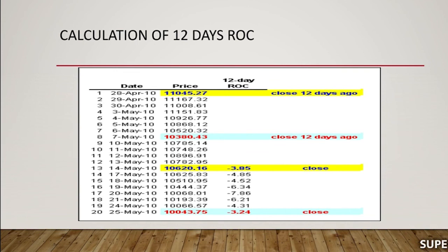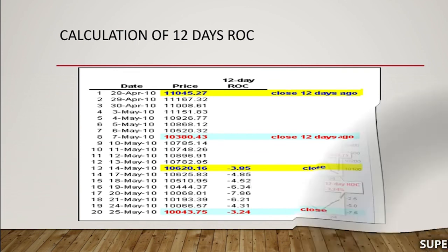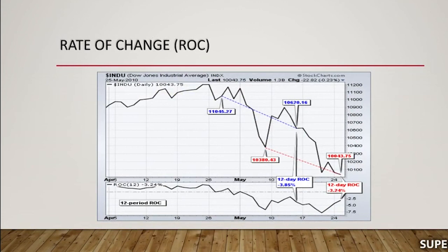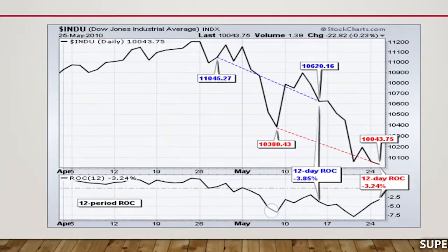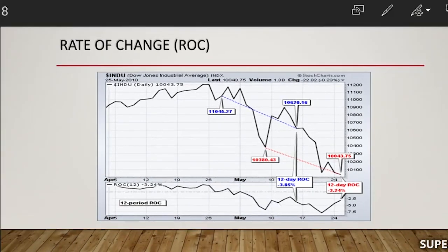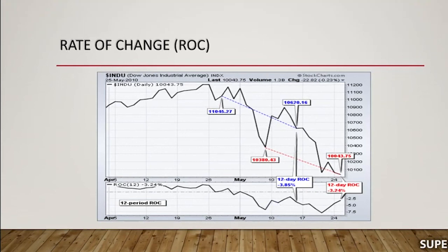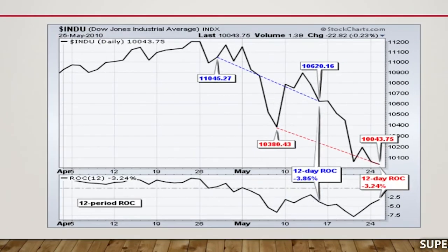Now let us plot these figures in a graph to understand how to decide whether to buy or sell a share. If the ROC is positive — crossing above the zero line — it indicates a buy signal. If it goes below the zero line and turns negative, it indicates a sell signal. This concludes the ROC discussion. Thank you.